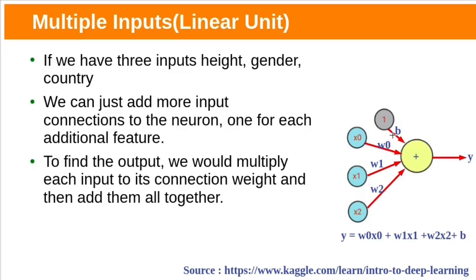Suppose if we have three inputs height, gender and country also. Based on height, gender and country, weight of a person might be different. Then we can add one more input country. We can add one input connection to the neuron for each additional feature. The resultant model will look like this. Here we have three inputs, so y equal to w0x0 plus w1x1 plus w2x2 plus bias value.